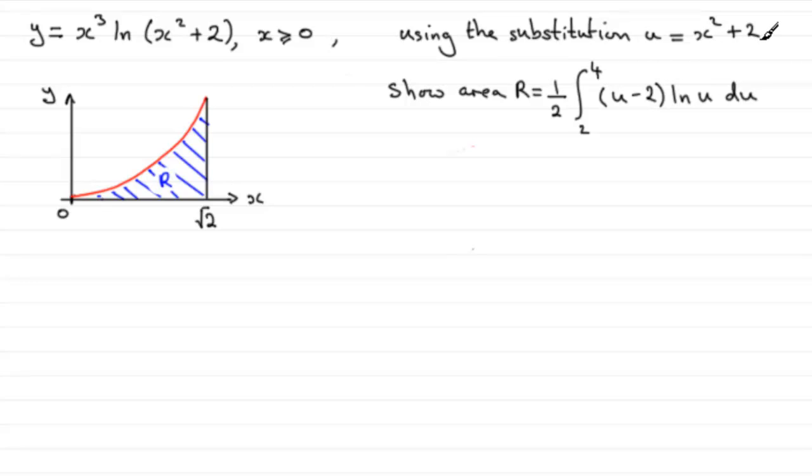So how are we going to do this? Well first of all, area bounded by a curve to the X axis is normally given by the integral of Y with respect to X, where your X limits go, in this case, from 0 to root 2.